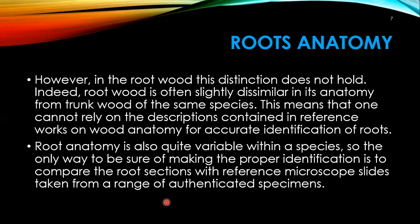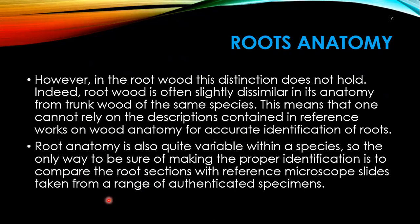When root wood is studied for distinction, if no distinction has been detected, root wood is often slightly dissimilar in its anatomy from the trunk wood of the same species. This means one cannot rely solely on descriptions in reference works for accurate identification of roots. Root wood is also quite variable within a species. The only way to ensure proper identification is to compare root sections with reference microscope slides taken from a range of authenticated specimens.